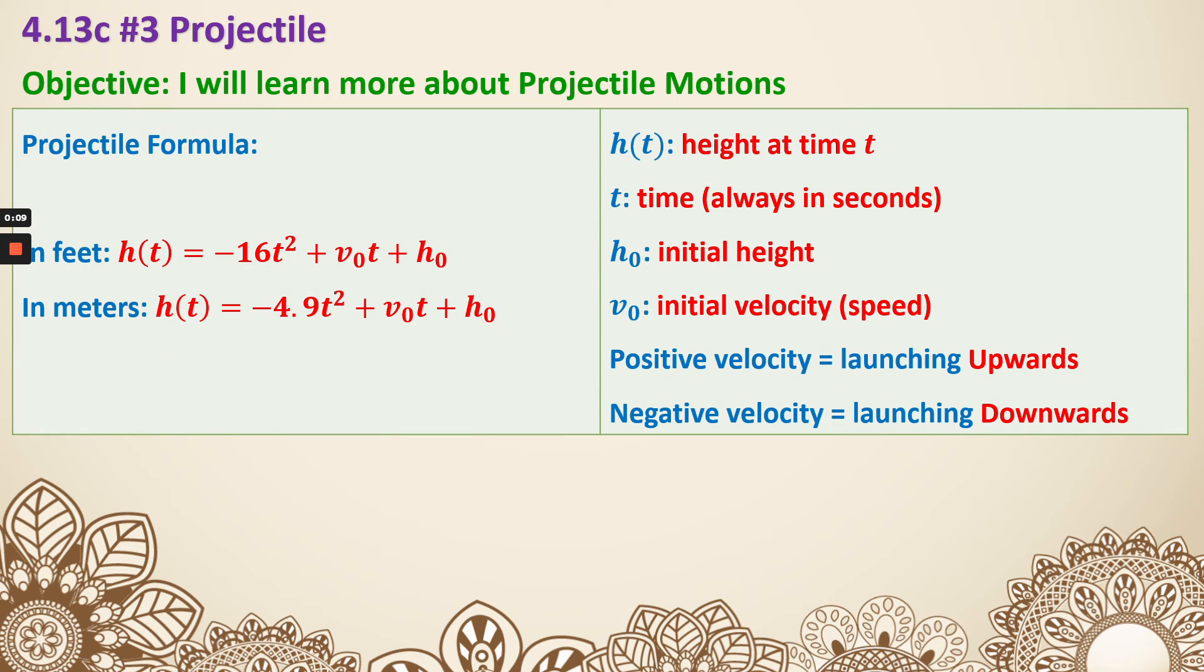First, these are the formulas and the descriptions we have seen before. In feet we're going to use the negative 16, in meters we're going to use the negative 4.9, and h(t) means height at time t, and t means time which is typically in seconds.